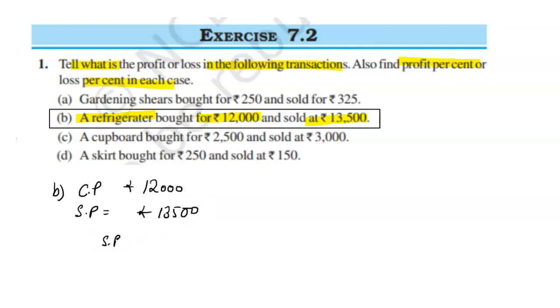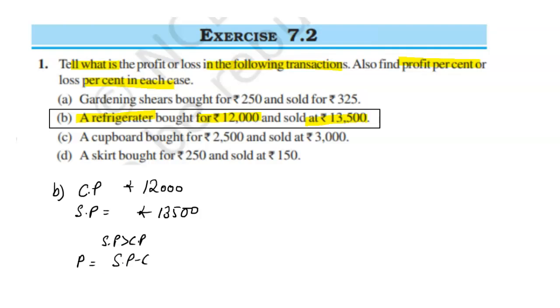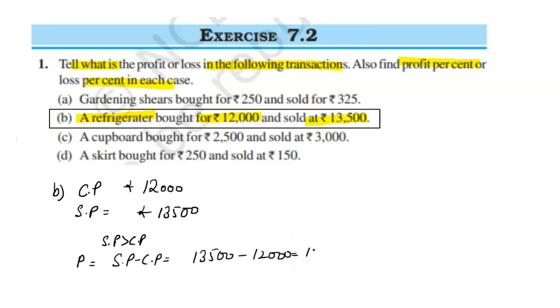Since the selling price is greater than the cost price, there is a profit. Profit = 13,500 minus 12,000, which is equal to 1,500.